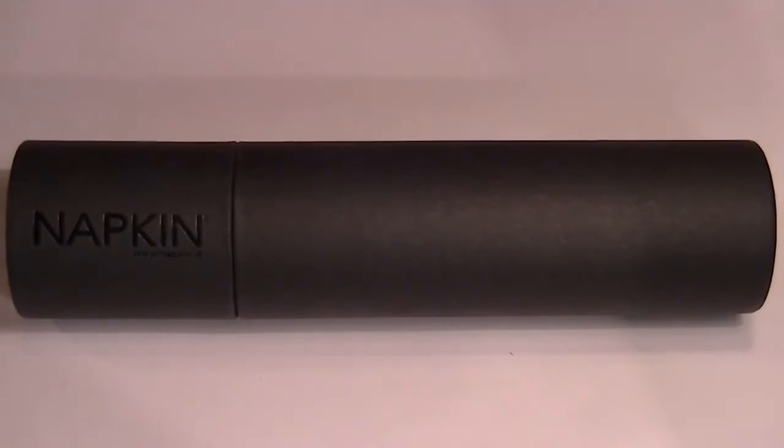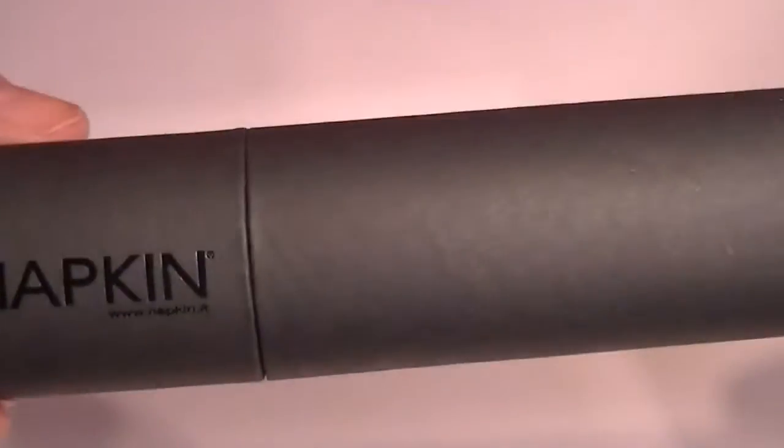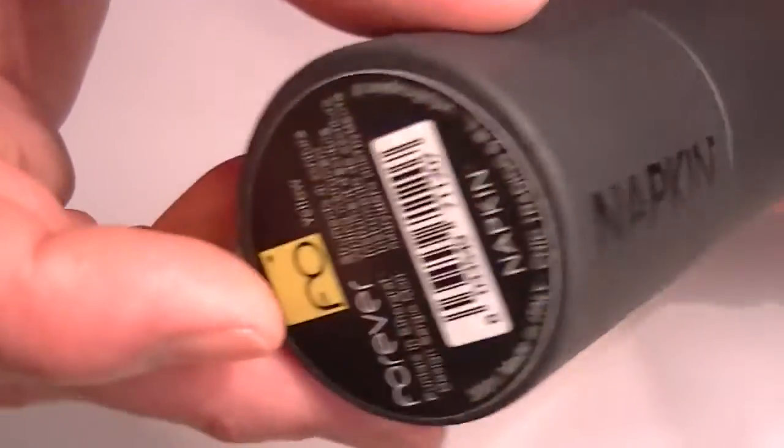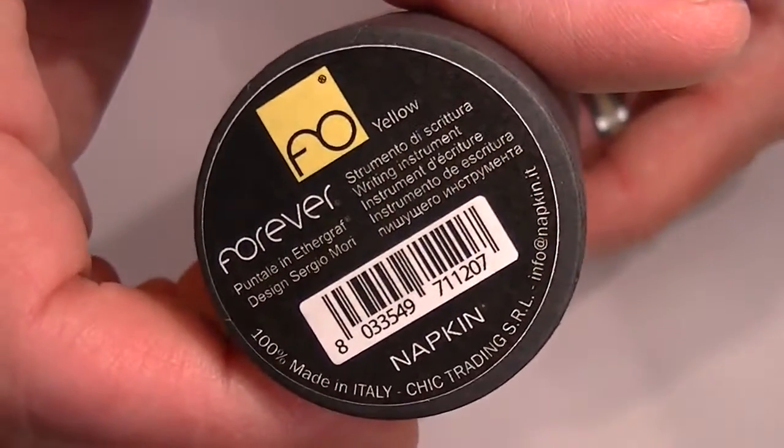This is the Napkin Forever Prima inkless pen. It comes in a black cardboard tube. You can see the Napkin logo here on the side of the tube as well as the Forever logo on the bottom of the box.